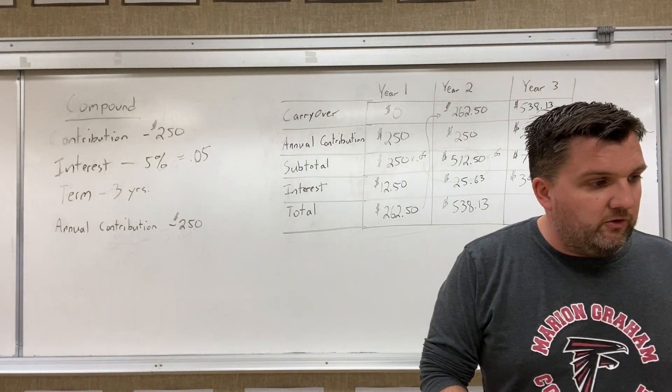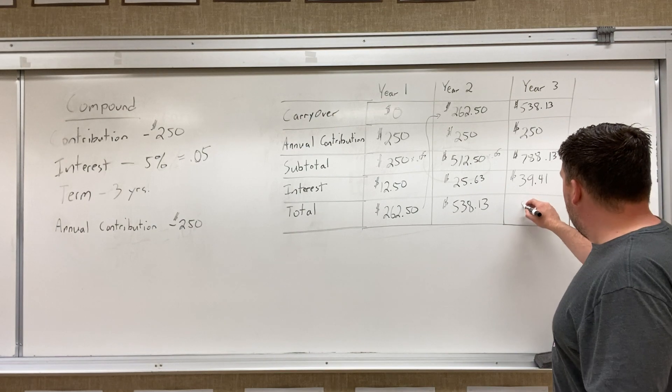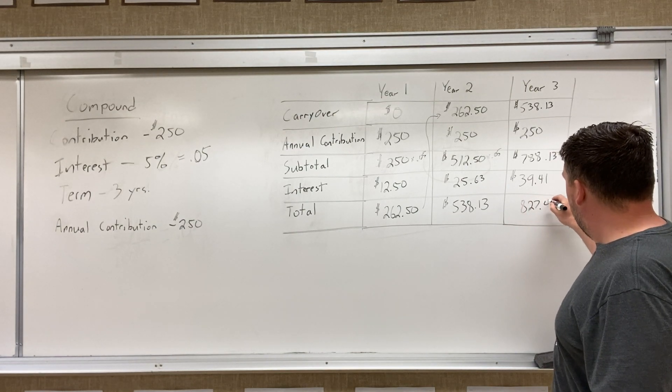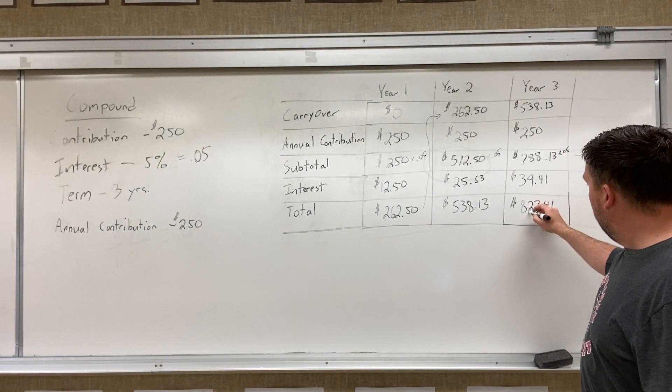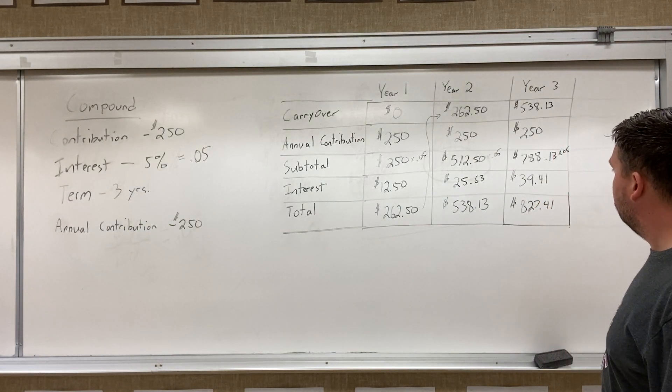So when we go and add those two numbers together, we should get $827.41 sitting in our bank account at the end of three years.